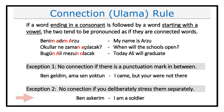So, in the example below, you can pronounce it with connection in a natural way, namely 'ben askerim', or if you want to stress them separately, you will say 'ben askerim'. So, basically speaking, if you don't feel like connecting them, then just pronounce them separately. Ben askerim.